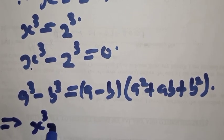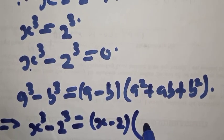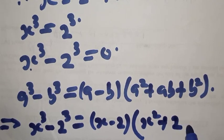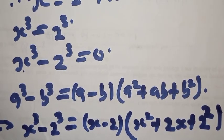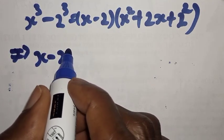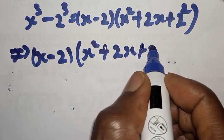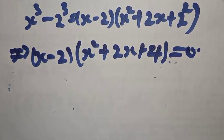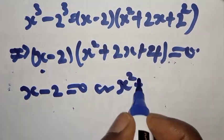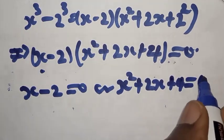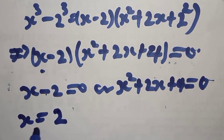From this expression, s raised to power 3 minus 2 raised to power 3 equals s minus 2, into s squared plus 2s plus 2 squared. Since 2 squared is 4, we have s minus 2, times s squared plus 2s plus 4, equal to 0. Therefore one root is s minus 2 equals 0, giving s is equal to 2.